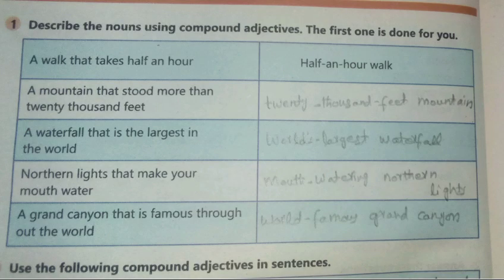Using compound adjectives — the first one is done for you. A walk that takes half an hour → a half-an-hour walk۔ A mountain that stood more than twenty thousand feet → a twenty-thousand-feet mountain۔ A waterfall that is the largest in the world → the world's largest waterfall۔ Northern lights that make your mouth water → mouth-watering northern lights۔ A Grand Canyon that is famous throughout the world → world-famous Grand Canyon.